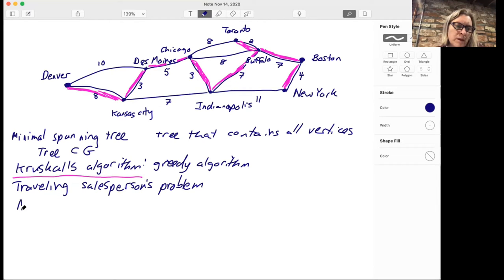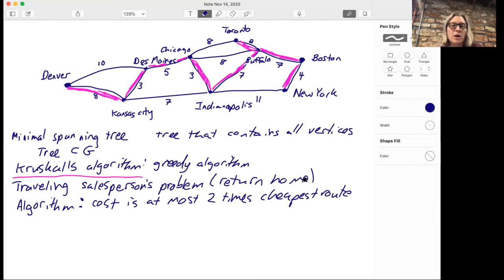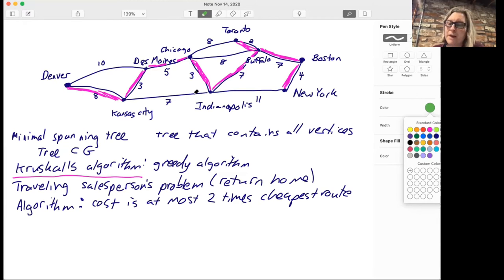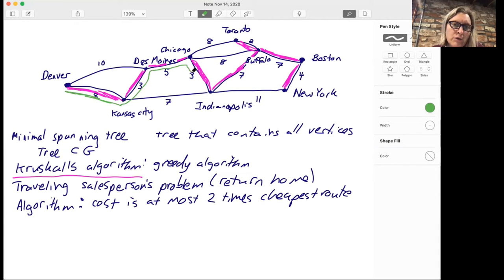We have another algorithm to do this. This algorithm is not guaranteed to give you the cheapest route, but we have an algorithm whose cost is at most twice the cheapest route. Maybe I should have really made it clear here that we need to return home. Here's how this algorithm is going to work. We have to pick a starting point. Let's pick Denver because that's our starting point. You use Kruskal's algorithm to make a minimal spanning tree. By the proof of that, that is the cheapest way to connect all those cities. To start out, you just trace around the tree, all the way around the tree.